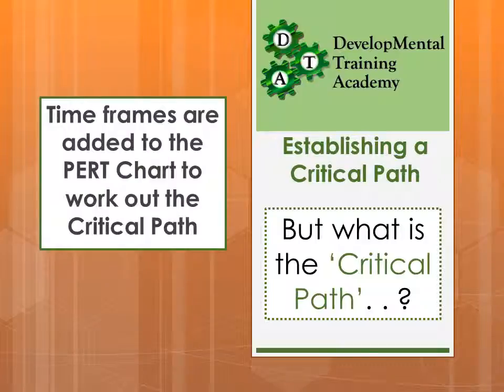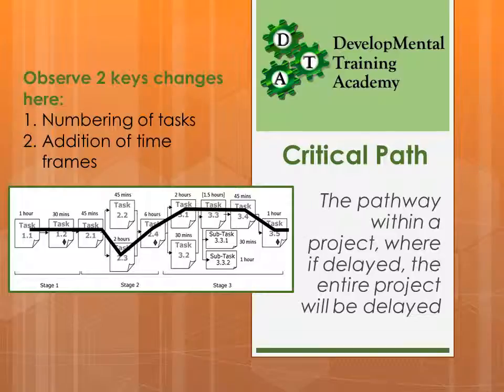The next thing is to establish what's called a critical path. This is where time frames are added to the PERT chart to work out the critical path — it's taking it to the next step. Many people get confused thinking that the critical path is the most important pathway on a project, but that's not actually the right definition. The critical path is the pathway within a project where, if delayed, the entire project will be delayed.